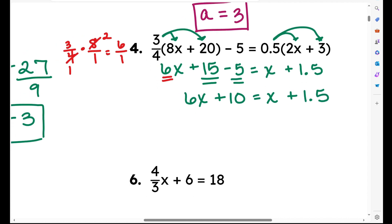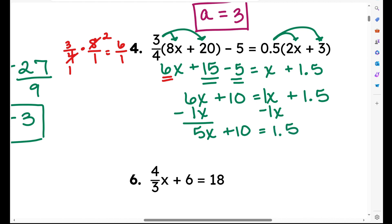Now we're going to move the variable to the same side. I have an x on the right — I need to subtract 1x from both sides. What I do to one side, I have to do to the other. Minus 1x gives me 5x plus 10 equals 1.5. Now I need to subtract 10 from both sides: negative 10 plus 1.5 is negative 8.5. So now I get 5x equals negative 8.5.